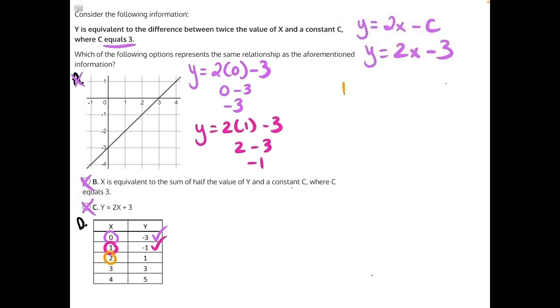Next, we'll do 2. y is equal to 2 times 2 minus 3. 2 times 2 is equal to 4 minus 3 is equal to 1, which matches the table.